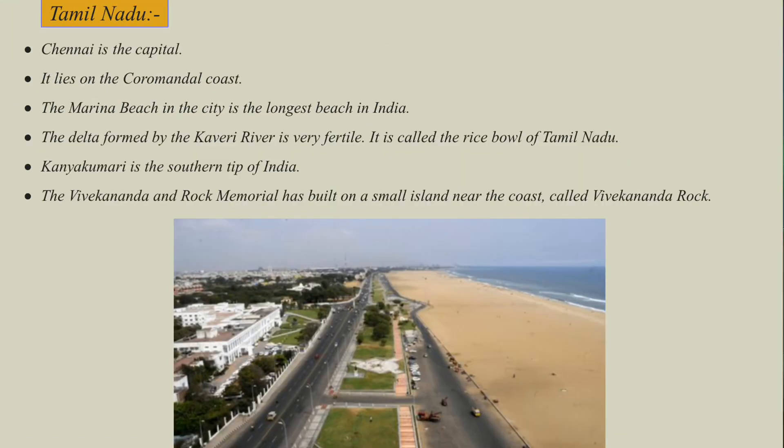Chennai is the capital of Tamil Nadu. It lies on the Coromandel coast. The Marina beach in the city is the longest natural beach in India. The delta formed by the Kaveri river is very fertile and is called the rice bowl of Tamil Nadu. Kanyakumari in Tamil Nadu is the southernmost tip of the Indian mainland. The Vivekananda Rock Memorial has been built on a small island near the coast called Vivekananda Rock.